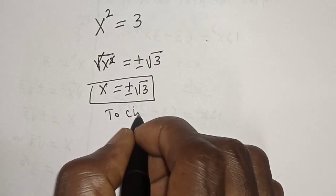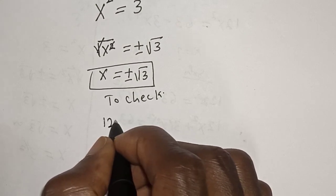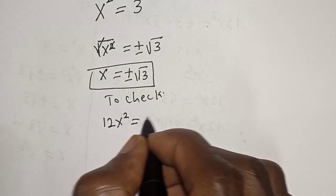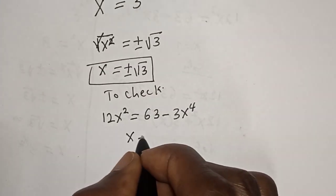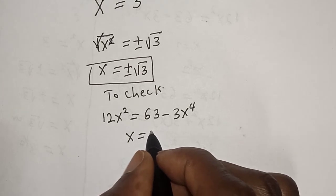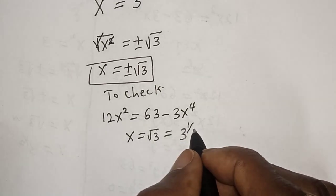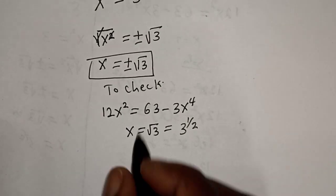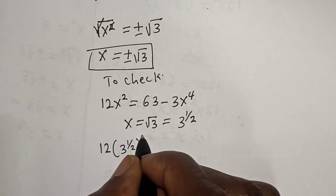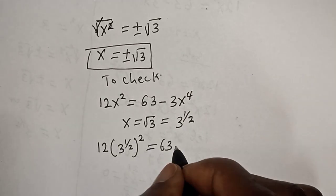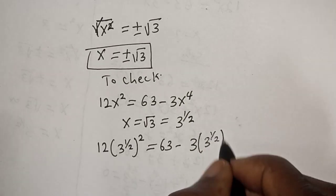We can check to confirm if our answer is right. Given equation: 12s² = 63 − 3s⁴. Let's take the positive root: s = √3 = 3^(1/2). Substituting, we have 12(3^(1/2))² = 63 − 3(3^(1/2))⁴.